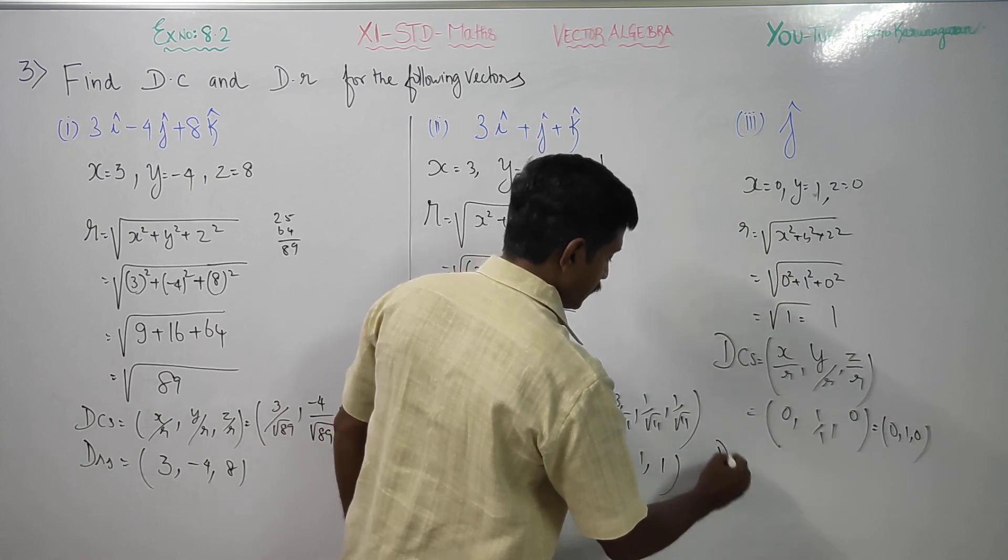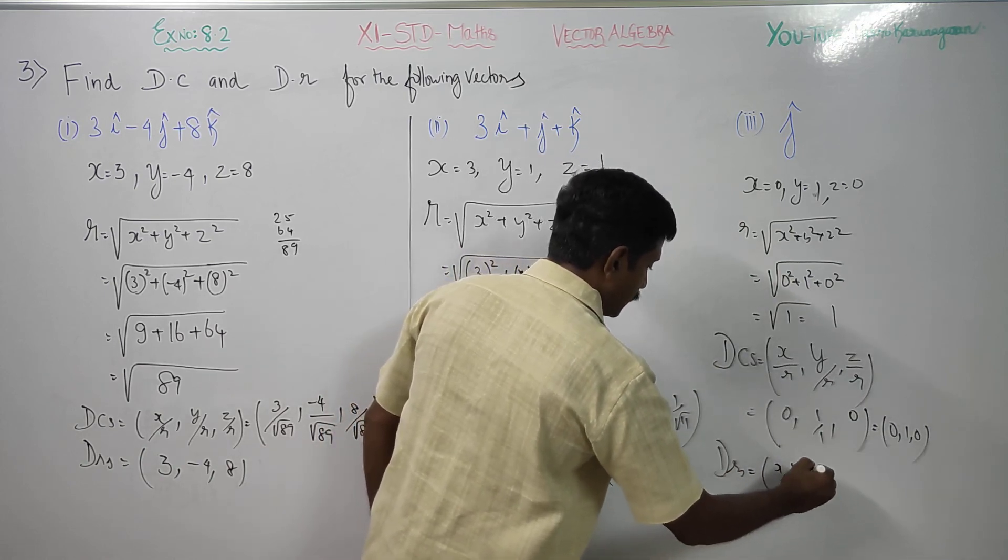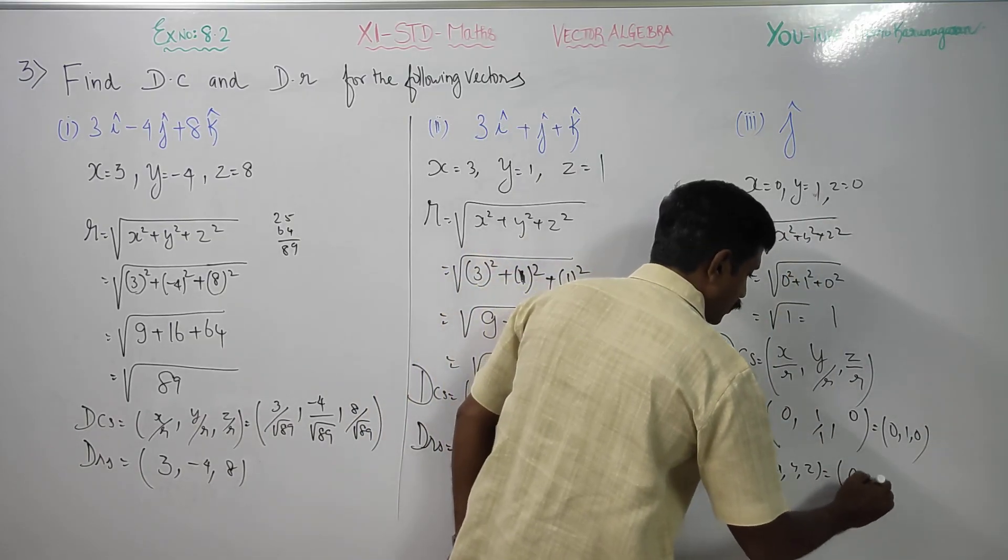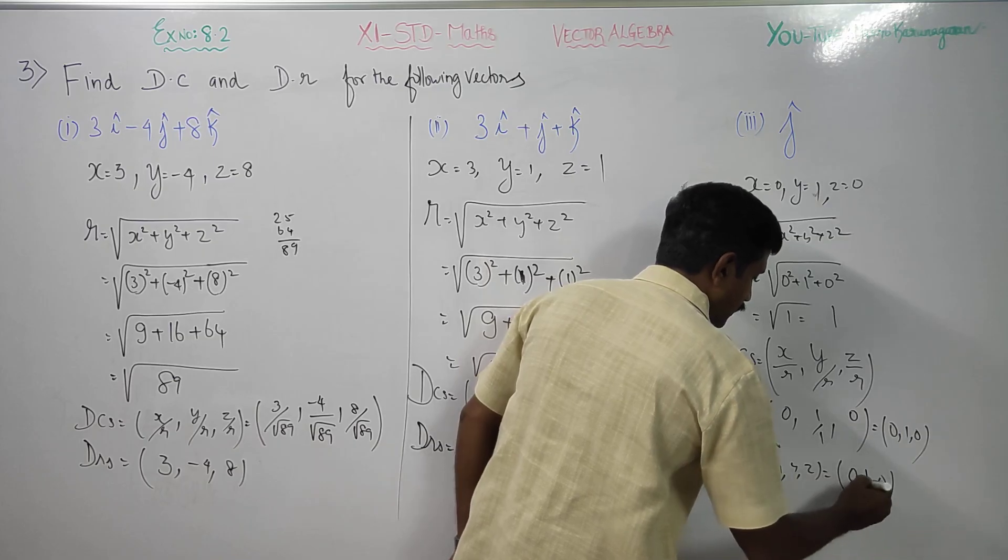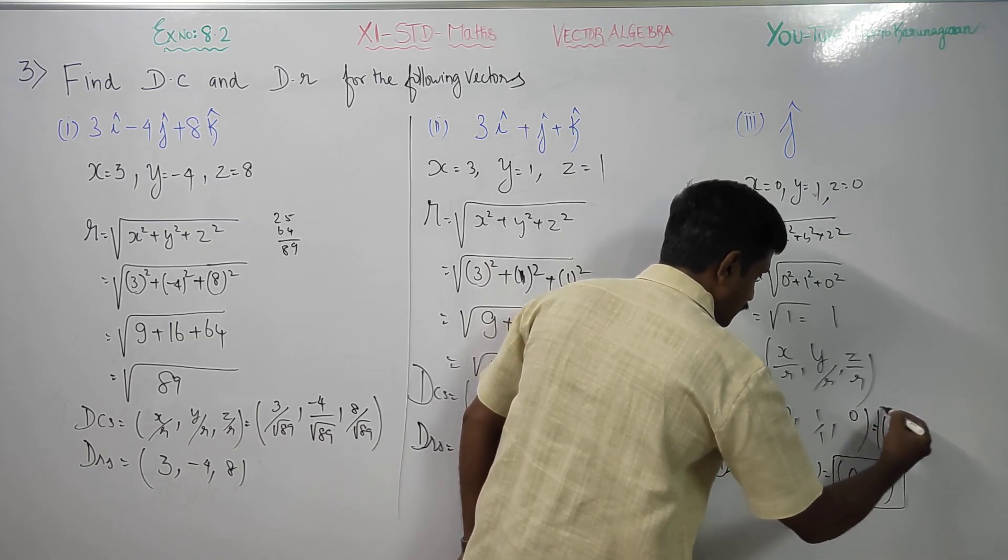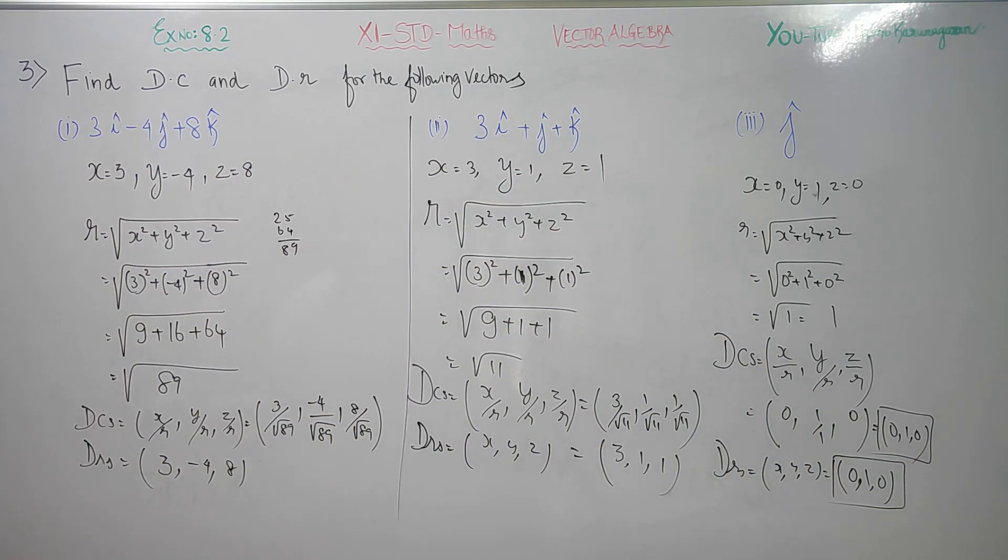Then direction ratios. Direction ratios is x, comma, y, comma, z. What is my x and what is my y, z? 0, 1, 0. This is my direction ratios and this is my direction cosines. First three subdivisions, okay?